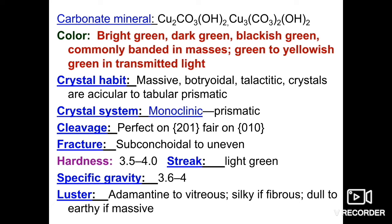Malachite color is bright green to dark green, black is green, commonly banded in massive form, green to yellowish green in transmitted light. Crystal habits are massive, botryoidal, stalactitic, or acicular to tabular prismatic crystals. Crystal system is monoclinic prismatic. Cleavage is perfect on {210} plane, fair on {001} plane. Fracture is subconchoidal to uneven. Hardness is 3.5 to 4. Streak is light green. Specific gravity is 3.6 to 4. Luster is adamantine to vitreous, silky in fibrous form, earthy in massive form.